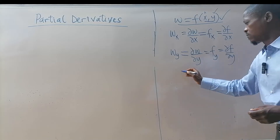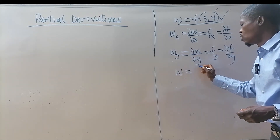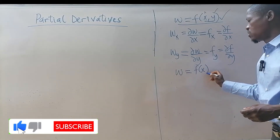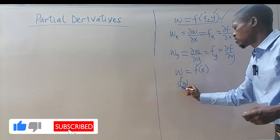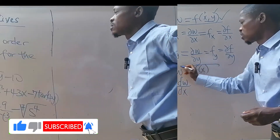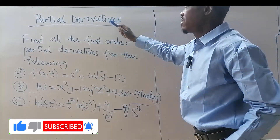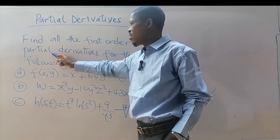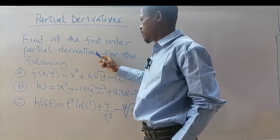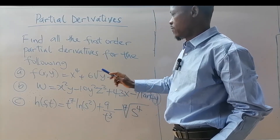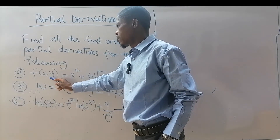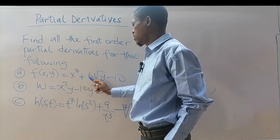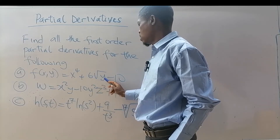For ordinary differentials, you only have one variable and you differentiate with respect to that variable. Now let's find all the first-order partial derivatives for the following: the first function is f(x, y) = x to the power 4 plus 6 times the square root of y minus 10.